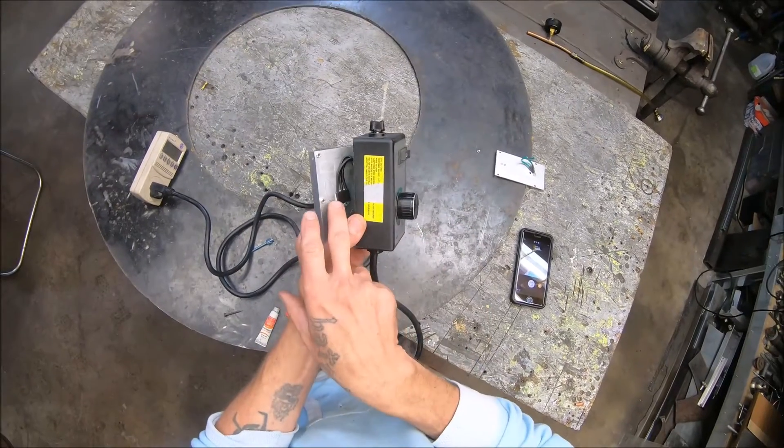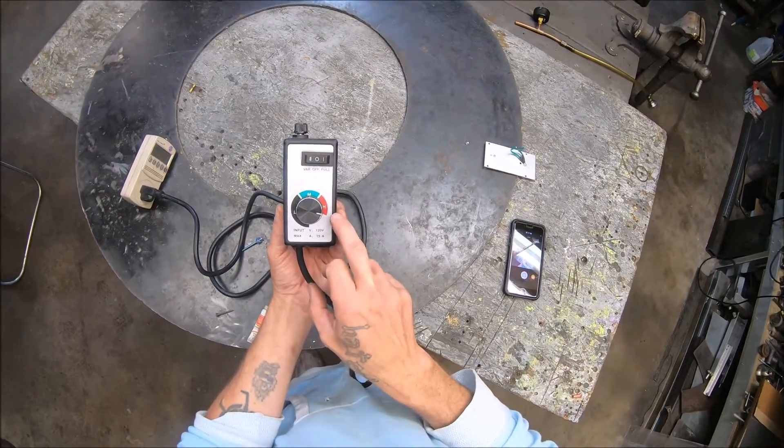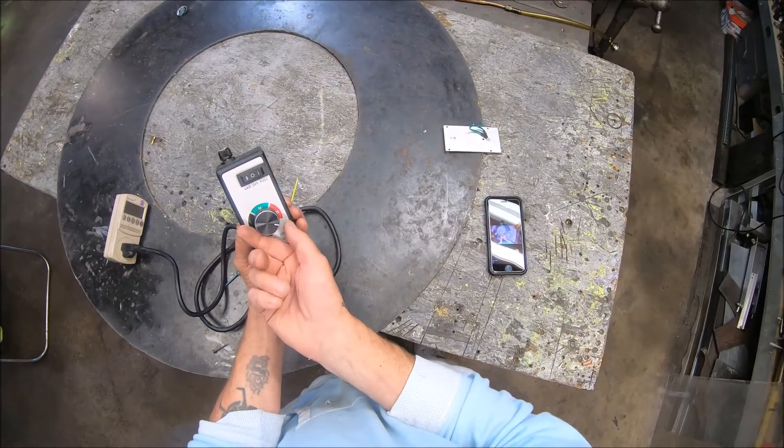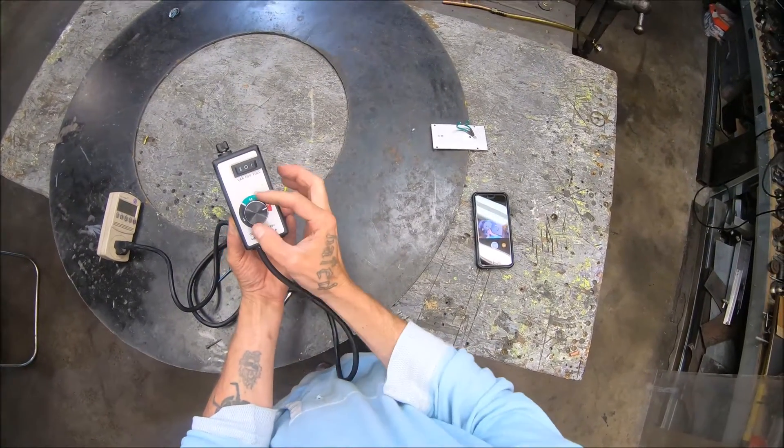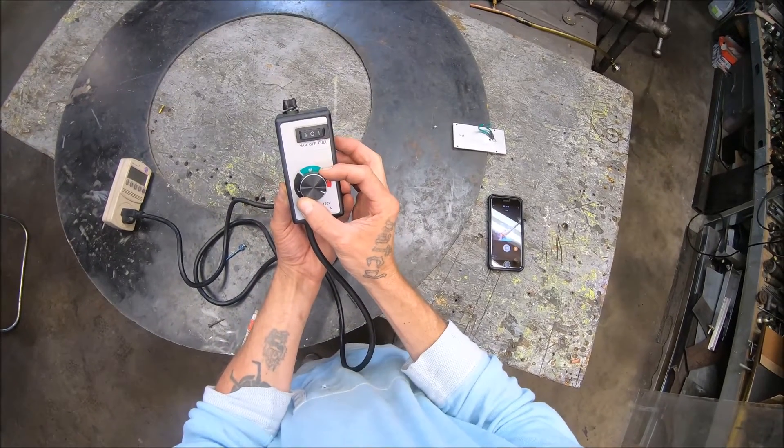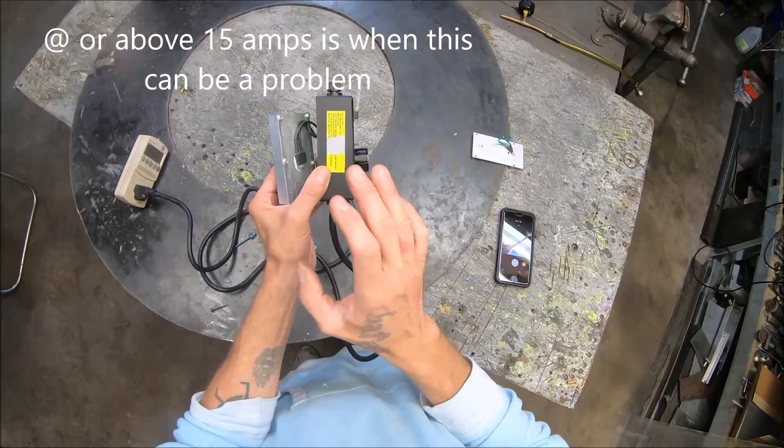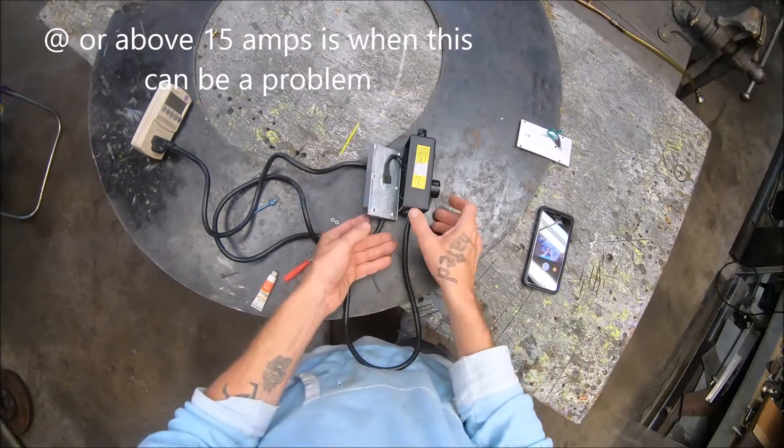Basically what happens - anytime you're running the triac near the red zone, you'll burn this triac up if you run an extended period of time anywhere near the end of the spectrum. Let's say you don't quite want it on full power but you're somewhere in this area, it will burn out pretty quick. I've burned up about 20 of these.